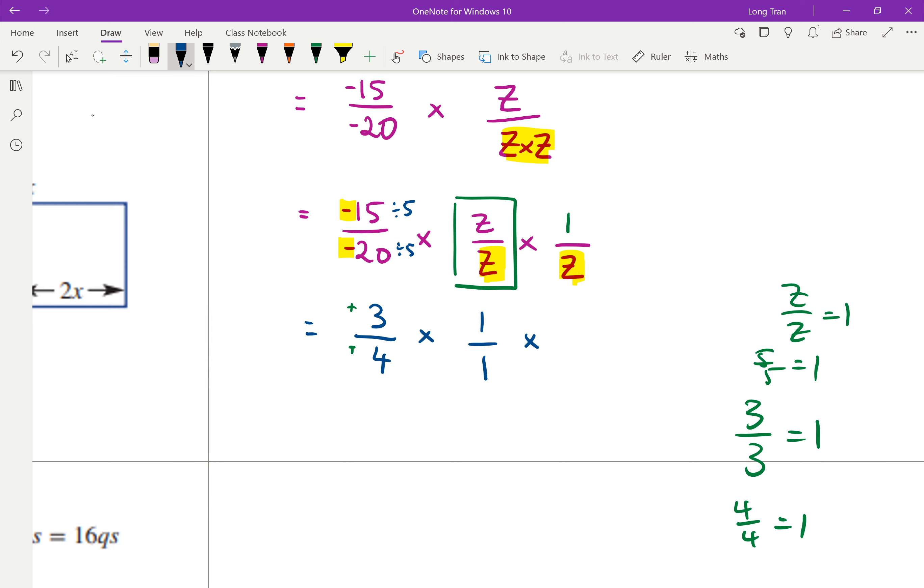And then don't forget you still have this 1 over z. So you can see what I'm doing there is I'm breaking it apart. And when you then combine them together, you multiply the fractions, top with top, bottom with bottom. Then you end up with 3 times 1 times 1 is 3. 4 times 1 times z is 4z.